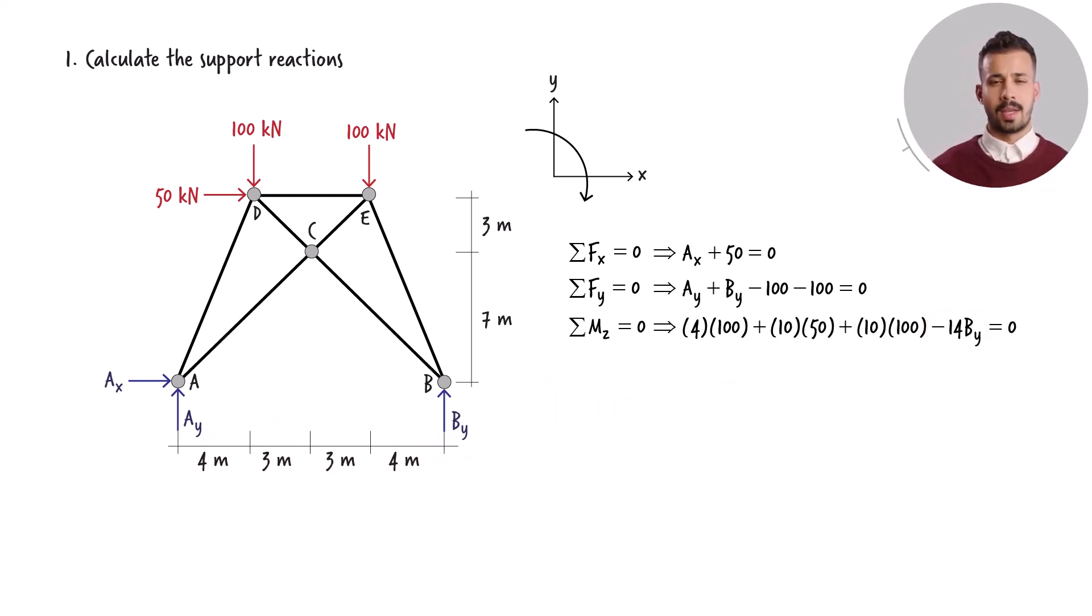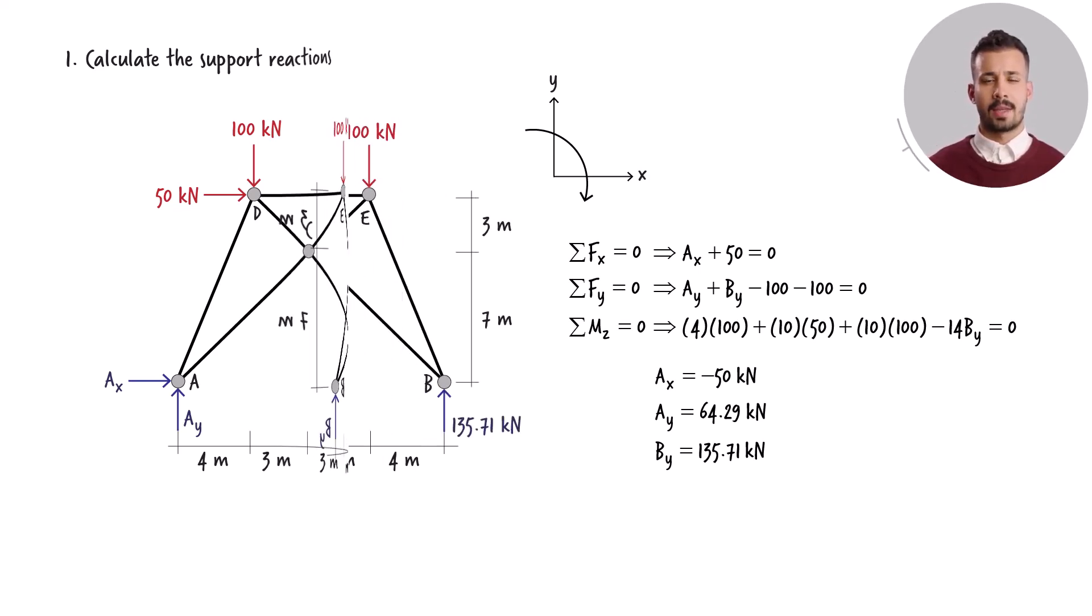Solving these three equations for the unknown forces, we get the support reactions. Let's revise the truss's free-body diagram to include the magnitudes of the support reaction forces.